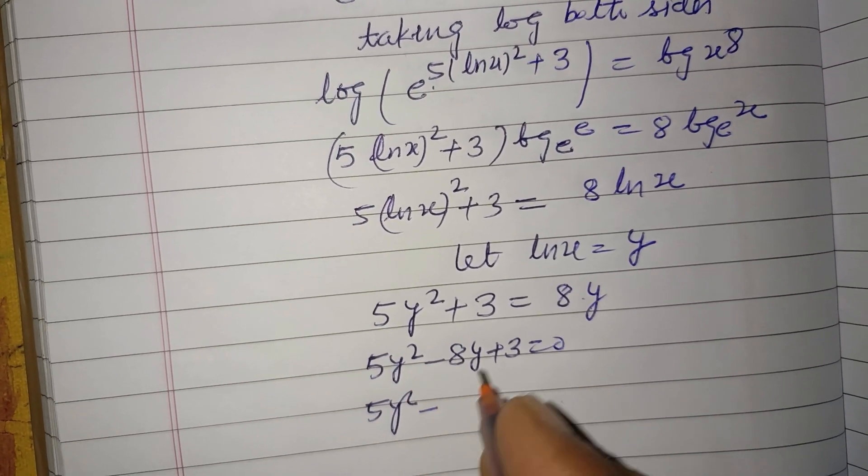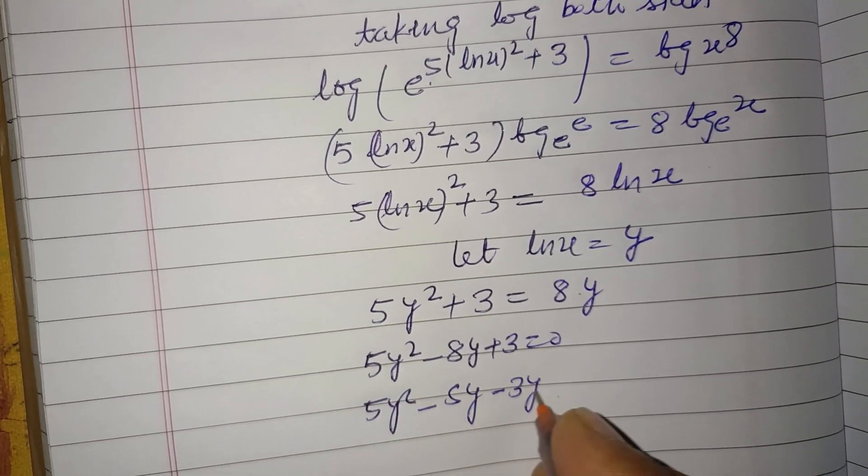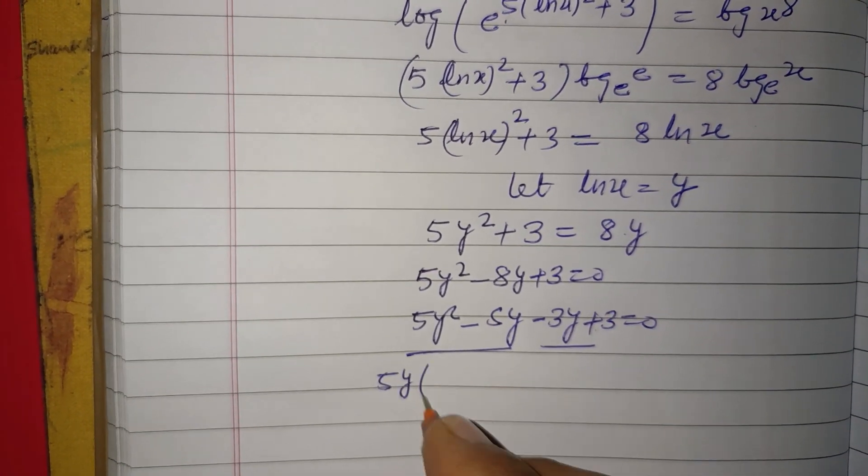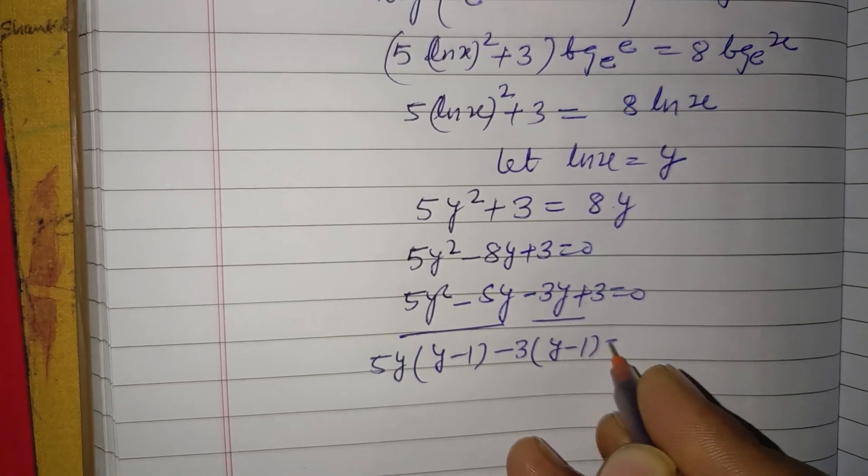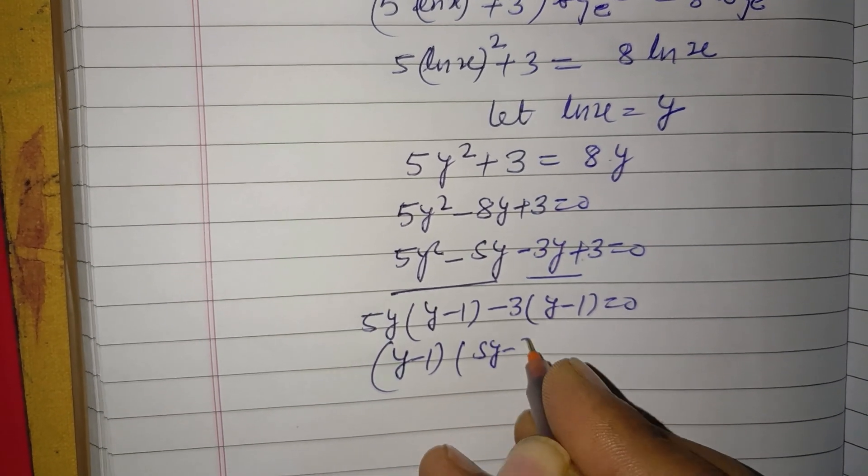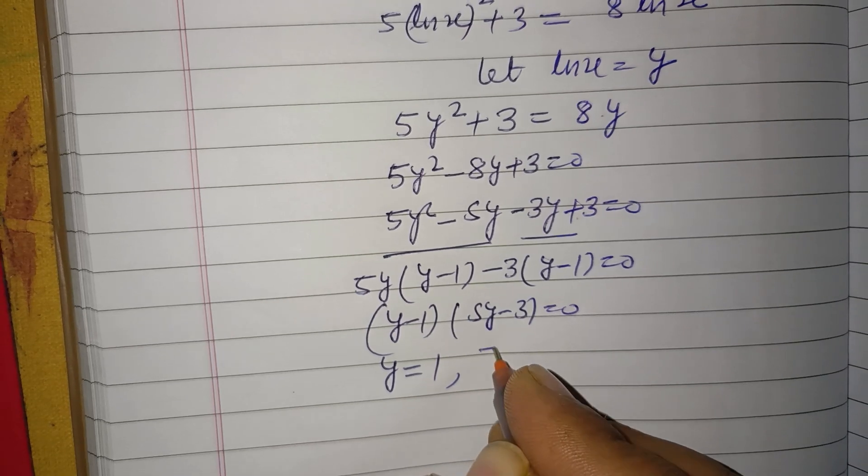Factorizing this quadratic, 5y squared, 5 times 3 is 15, 5 and 3 make 8. So 5y minus 3 into y minus 1 equals 0. From here, y is 1 and 3/5.